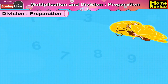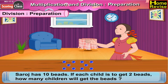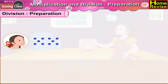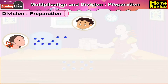Division Preparation. Saroj has ten beads. If each child is to get two beads, how many children will get the beads? Now, Saroj has ten beads. Saroj will give each child two beads. This is the first child. He gets his two beads.